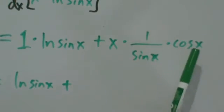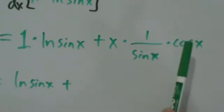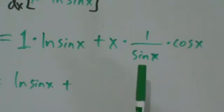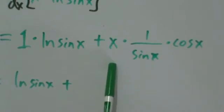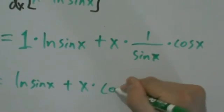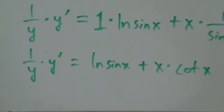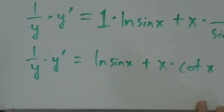Remember, cosine of x over sine of x is the same thing as cotangent of x. So what we have is x times cotangent of x, and that's pretty much all we can do to simplify the right.